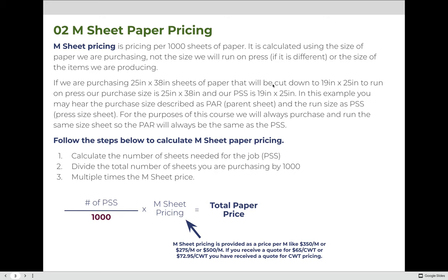The first and really the easier way to price paper is called M-sheet pricing. M-sheet pricing is the pricing per 1,000 sheets of paper. It is calculated using the size of paper that we are purchasing — not the size we're running on press if it's different, or the size of the item we're producing. So if we're purchasing 25 by 38 inch sheets and they'll be cut down to 19 by 25 inches to run on press, the purchase size is 25 by 38.